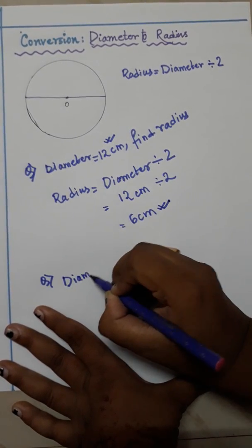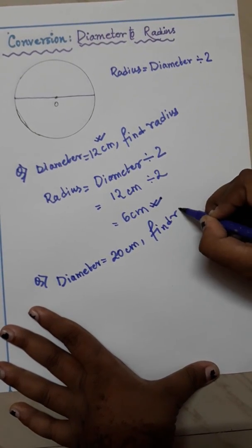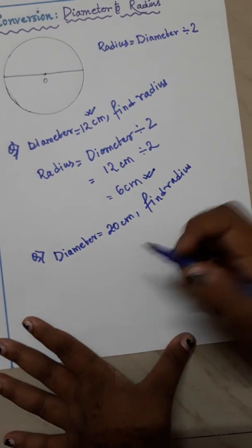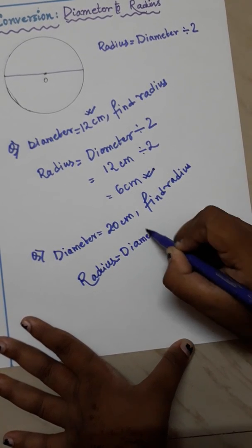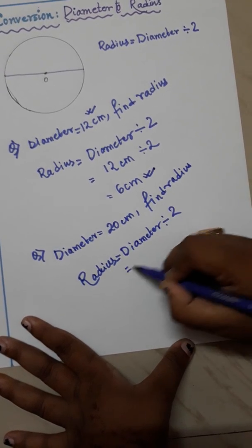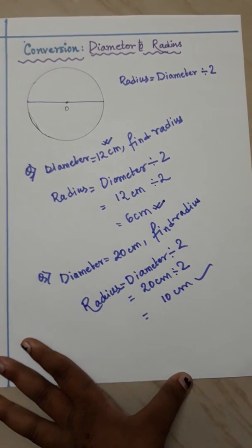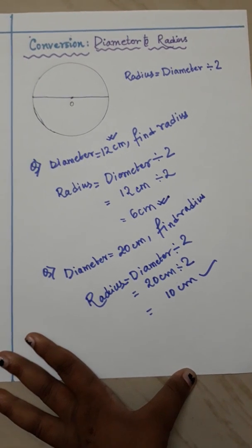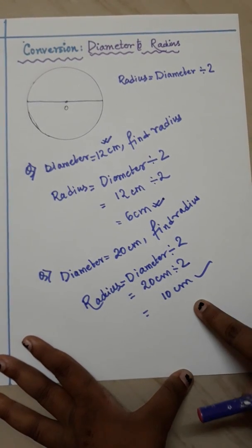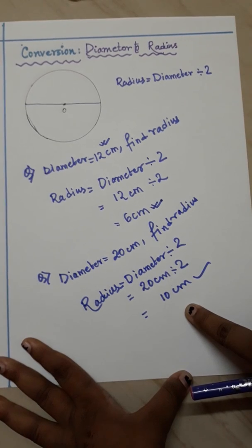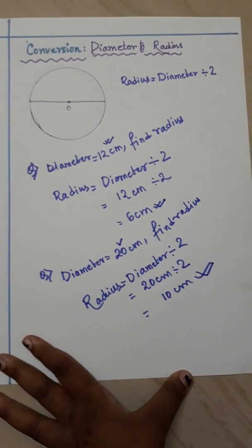Next another one. If diameter is given as 20 cm, find radius. You write the formula: radius equals diameter divided by 2, so 20 cm divided by 2 equals 10 cm. We can check: double of radius is diameter, and double of 10 is 20, which is given — so what we have done is right.